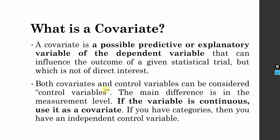Both covariates and control variables can be considered control variables. 'Control variable' is an umbrella term. The main difference is in the measurement level: if the variable is continuous, use it as a covariate; if you have categories like gender, then you call it an independent control variable.